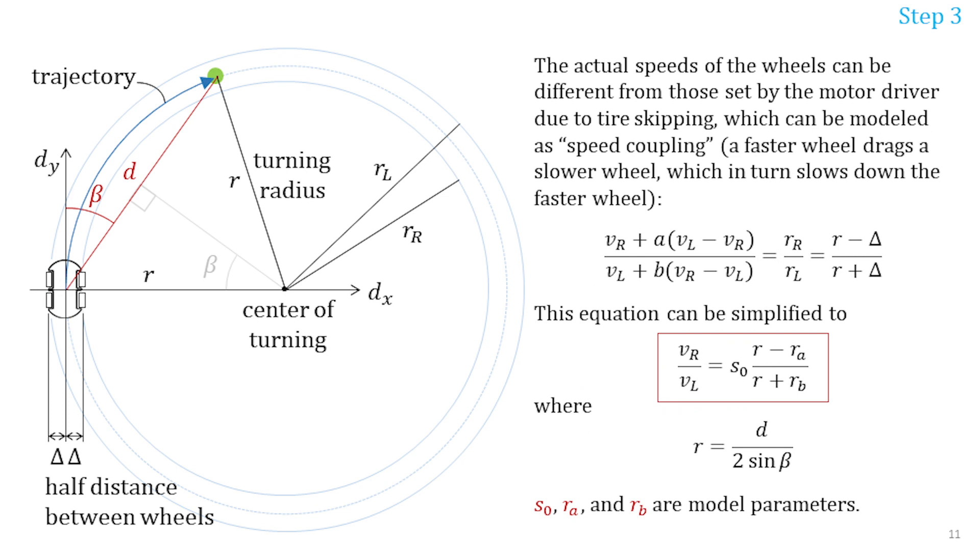While experimenting with the car I noticed that the left and the right motors had different speeds even if they were set equal. This made the car deviate from the straight line. In my case the car was leading to the right. I also noticed that even if I set the right or left motors to zero speed the corresponding wheels travel some distance which made the turns wider than estimated. I call this effect speed coupling. A faster wheel drags a slower wheel which in turn slows down the faster wheel. To include this effect in the model each speed had an error term proportional to the difference of speed between the left and the right wheels.